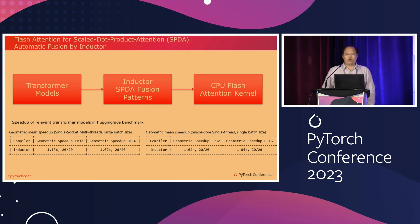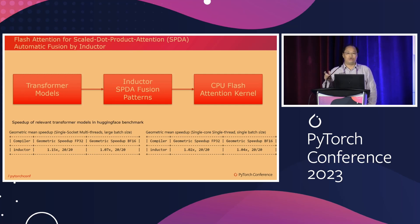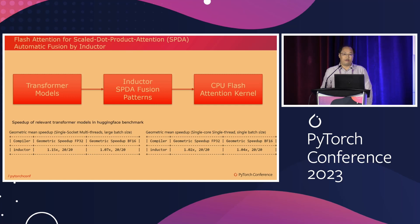Scaled dot-product attention is one important component in transformer models, and flash attention is an effective fusion algorithm to speed it up. We added a flash attention fusion kernel for CPU, which allows inductor to identify the scaled dot-product attention fusion pattern and map it to the flash attention fusion kernel. This brings additional speedup for popular HuggingFace transformer models.